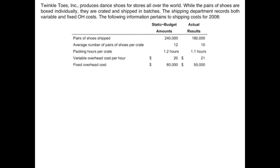We're given our information — our static budget amounts and our actual results. This problem differs from many other example problems in standard costing because it is on a batch level, and we have to keep that in mind when looking at our charts and computing these variances.